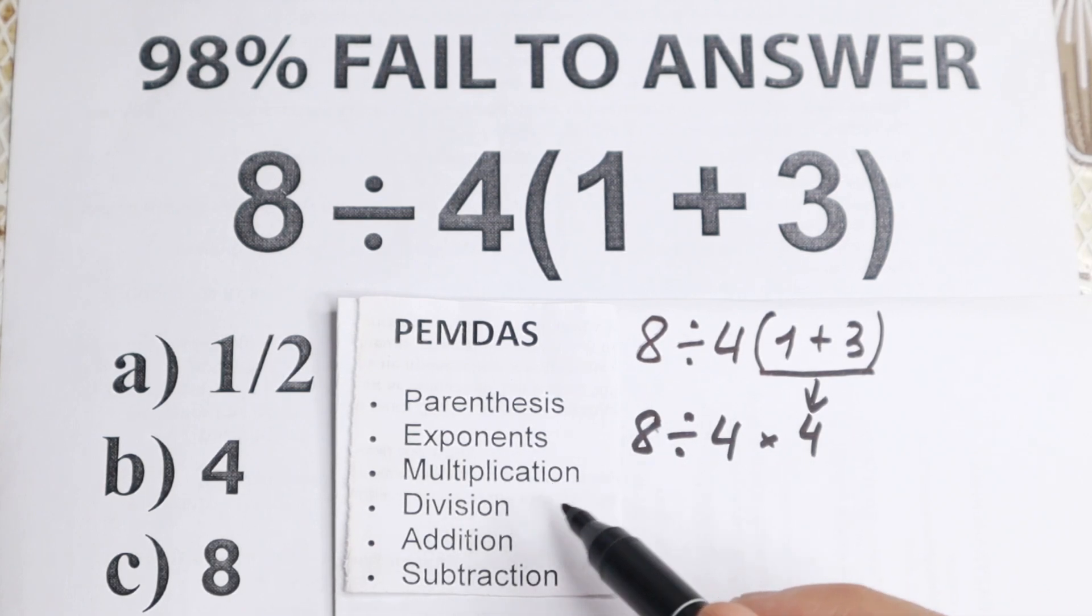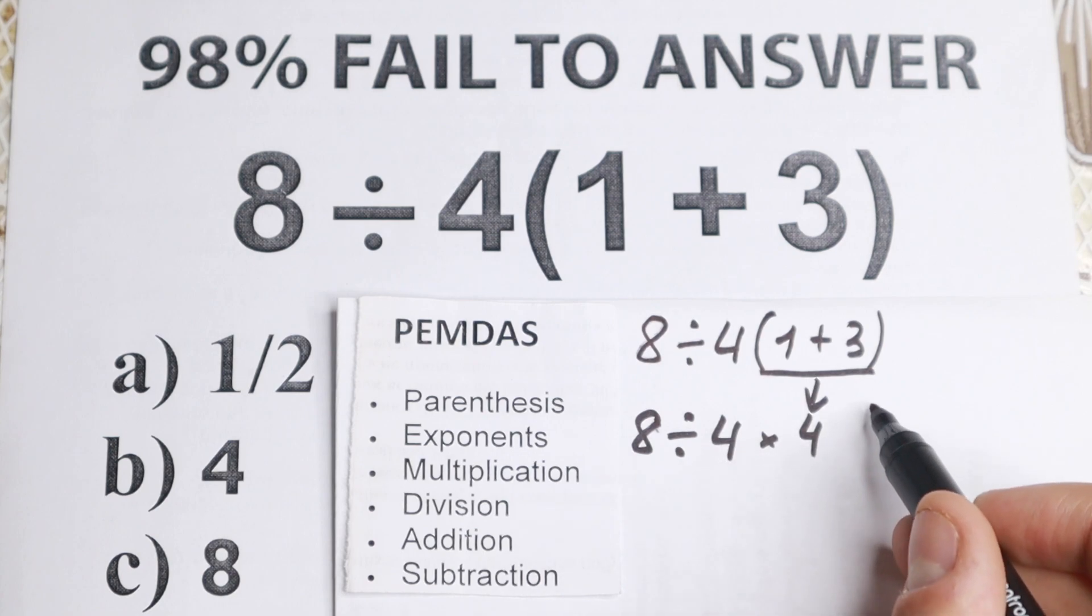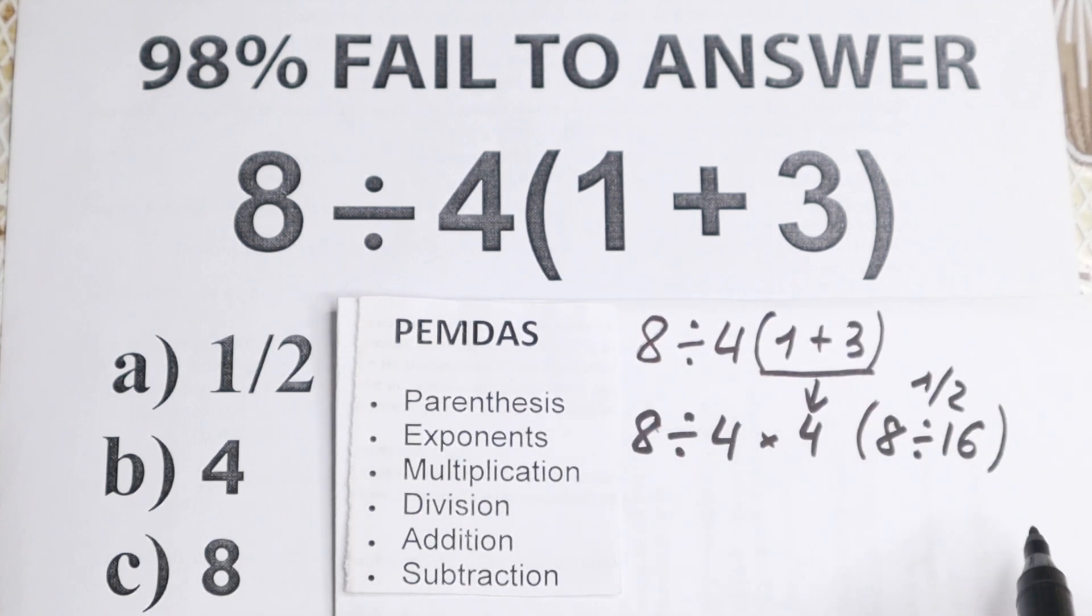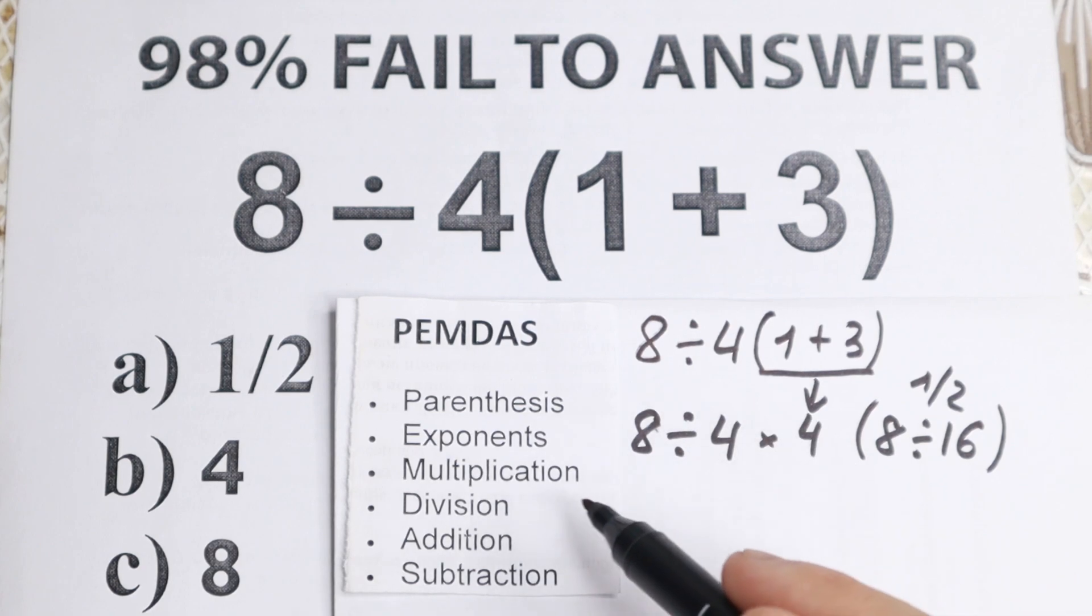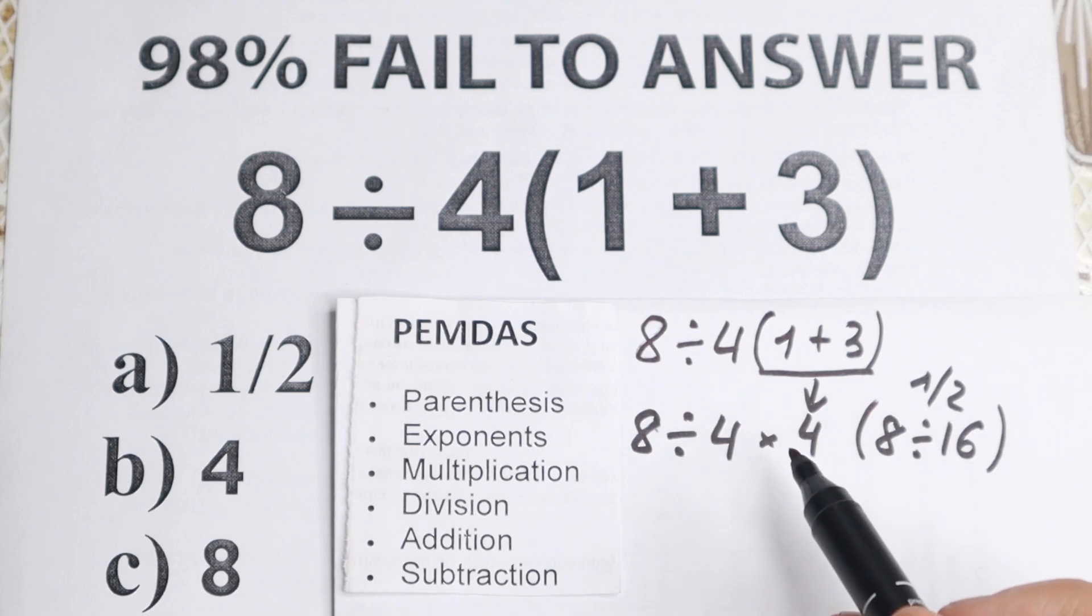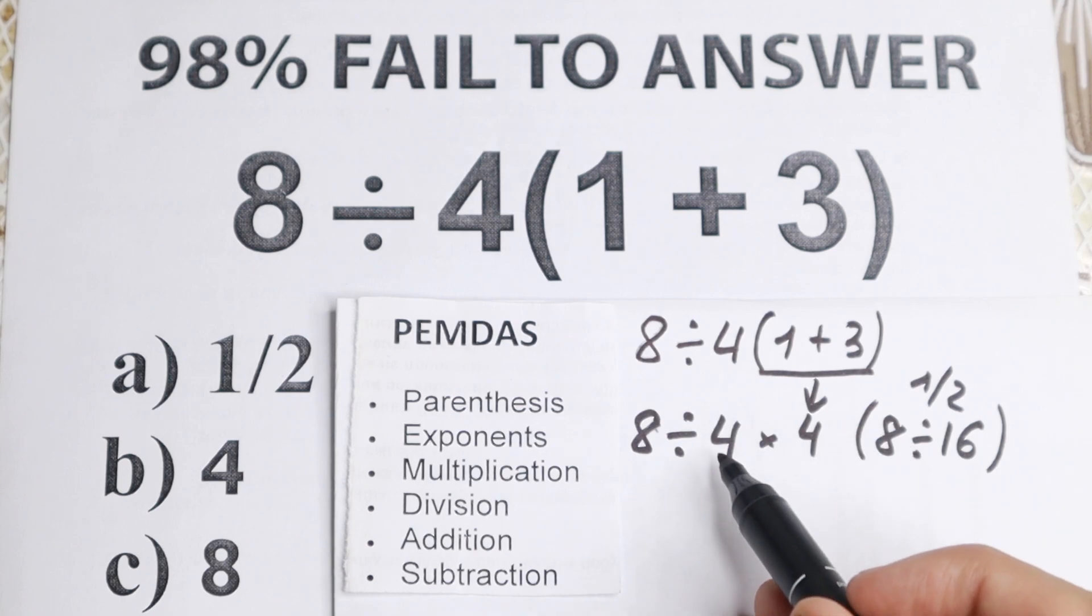Then we have multiplication and division, but a lot of students make this mistake. They think, okay, multiplication, let's start with multiplication. And they say, okay, 4 times 4 equal to 16, and you will have 8 divided by 16, it looks like 1 half. So they say option A is correct. But why do you start from this? Why do you start from this multiplication?